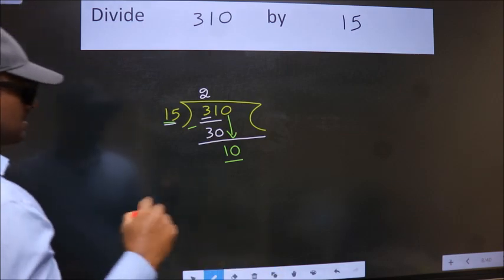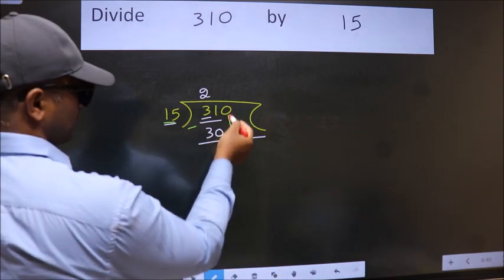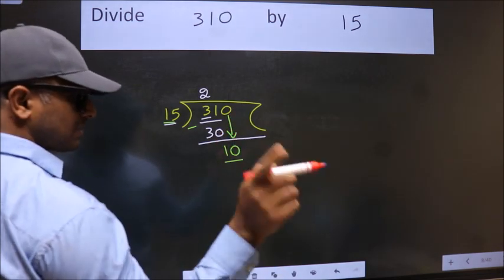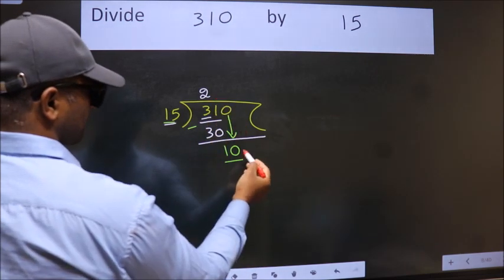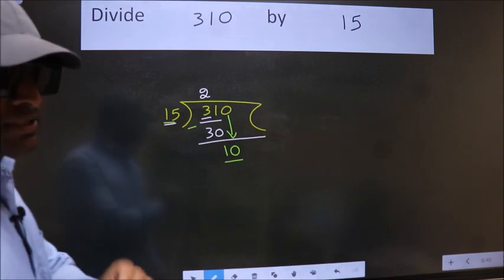Because just now you brought this number down, and in the same step, you want to put dot, take 0. Which is wrong.